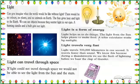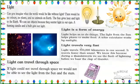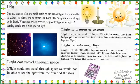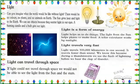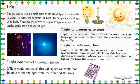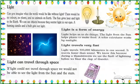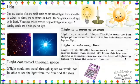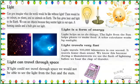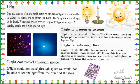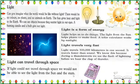A solar calculator works by sunlight. Light travels very fast — light travels 300,000 kilometers in one second. It travels faster than sound. We know this because during thunderstorms we see the flash of lightning before we hear the clap of thunder. Light can travel through space. If light could not travel through space, we would not be able to see the light from the sun and the stars.